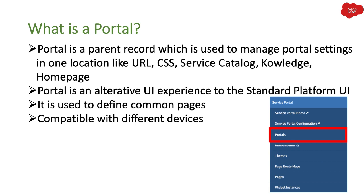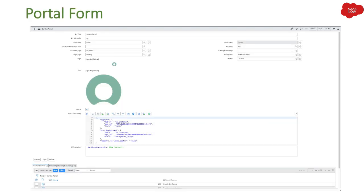Under the Service Portal application you have a module called Portals. Once you click that, it will open up the list of portal records you have in your instance. You can also create a new portal with the same module. On screen you can see the portal record which has different fields.